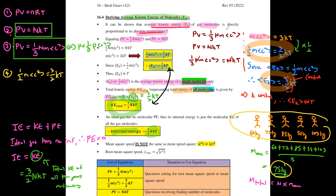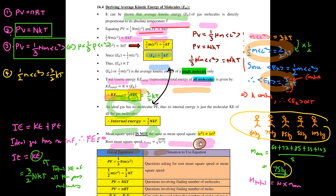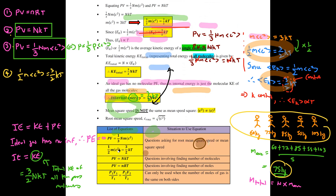Mean square speed ⟨c²⟩ and mean speed squared ⟨c⟩² are not the same. From the mean square speed you can find the root mean square (r.m.s.) speed, which is simply the square root of the mean square speed. Questions involving r.m.s. speed or mean square speed typically use P = ⅓Nm⟨c²⟩ and ½m⟨c²⟩ = 3/2 kT.